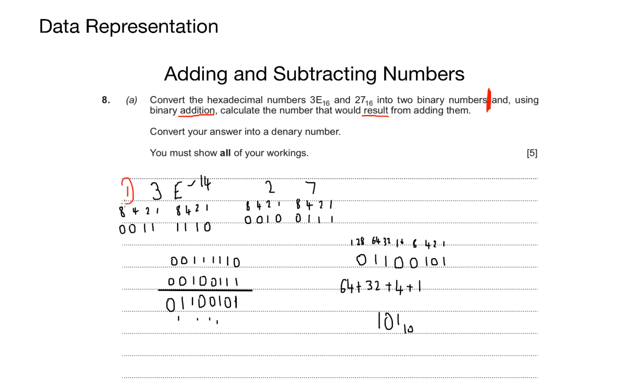So where do we get our marks for this question? You get 1 mark for converting your hexadecimal numbers, so that'll be 2 marks in total. You get 1 mark for your correct binary addition, and you also get a mark for showing your carry bits in the right places. And then finally, your 5th mark comes from the correct conversion back into denary.